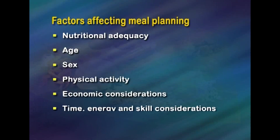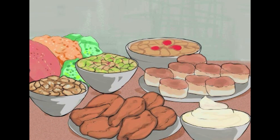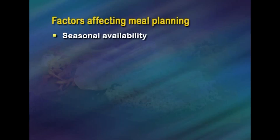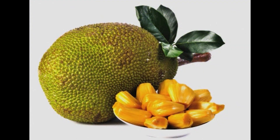One can therefore plan a balanced diet to suit every budget. Time, energy, and skill considerations: While planning meals, you should consider the resources like time, energy, and skill available to the family. A working mother, for example, could prepare a nutritious upma instead of three or four items for dinner. Seasonal availability: Some foods are available in summer while some in winter. Off-season foods are expensive and less nutritious, while those in season are fresh, nutritious, tasty, and cheap.